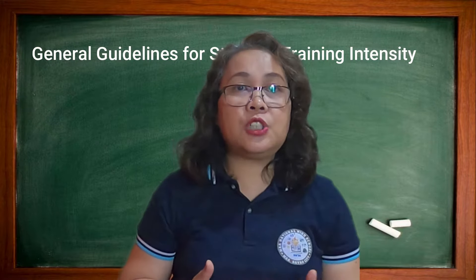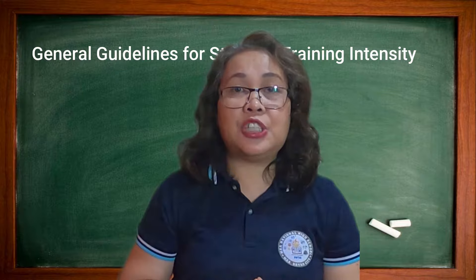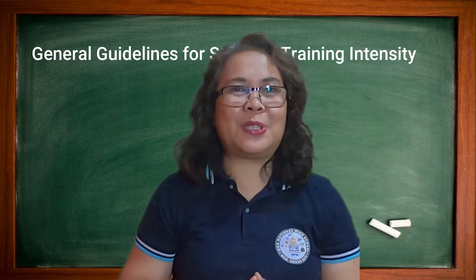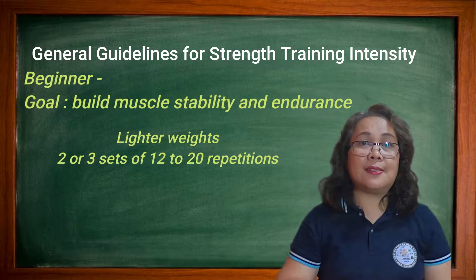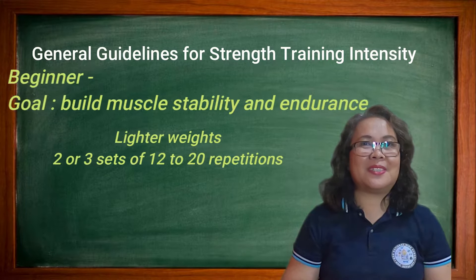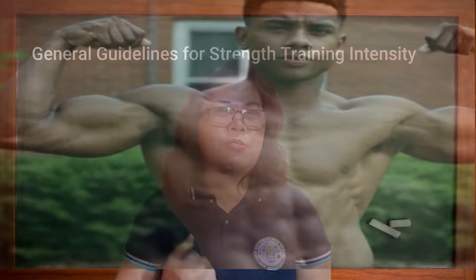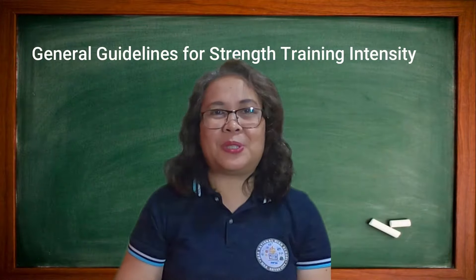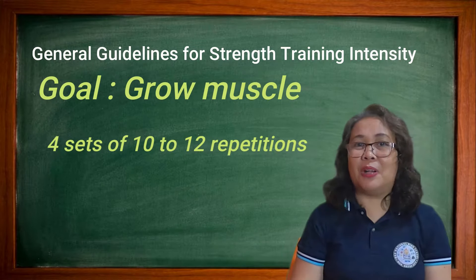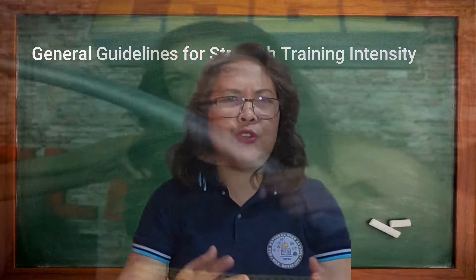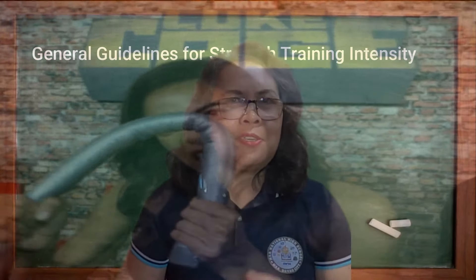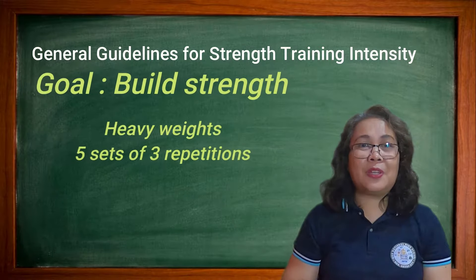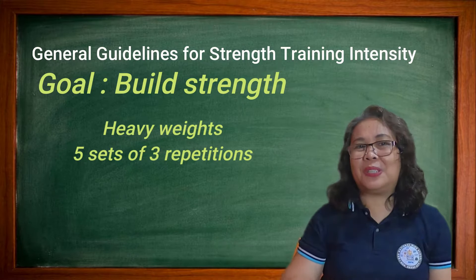If you are a beginner looking to build muscle stability and endurance, you need lighter weights, few sets, and high repetitions — for example, 2 or 3 sets of 12 to 20 repetitions. If your goal is to grow muscles, use a higher number of sets with a moderate amount of repetitions — for example, 4 sets of 10 to 12 repetitions. If you want to build strength, use heavy weights, more sets with fewer repetitions — for example, 5 sets of 3 repetitions.